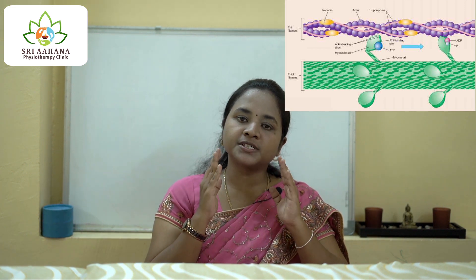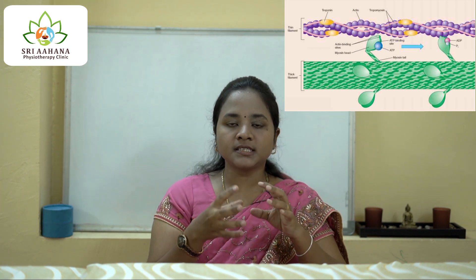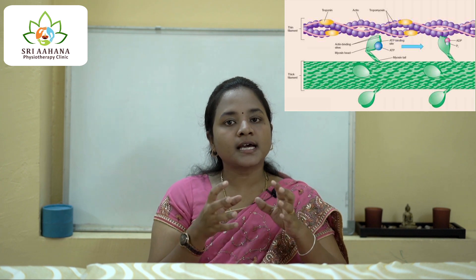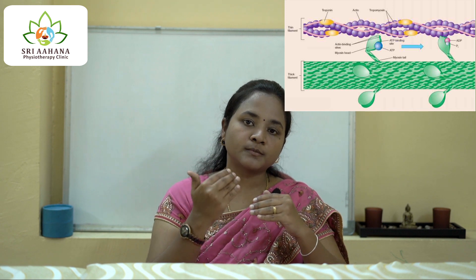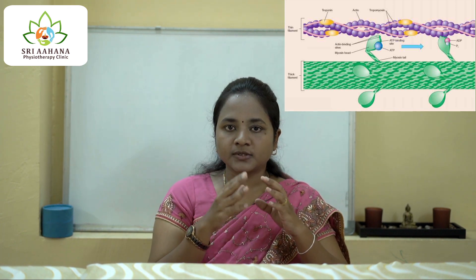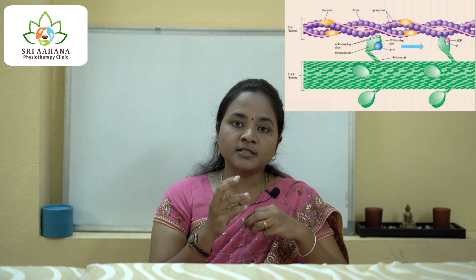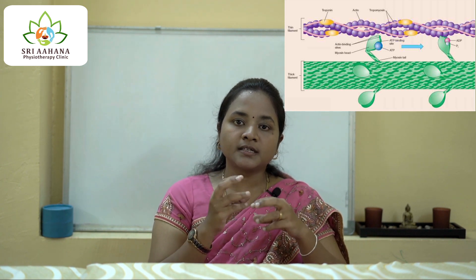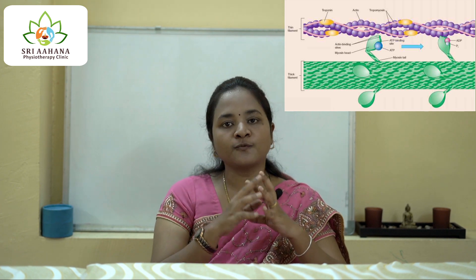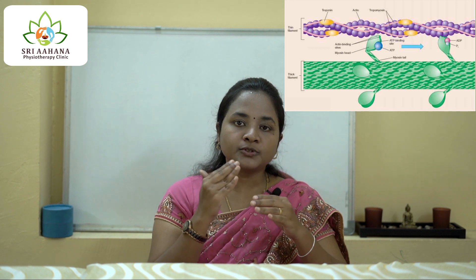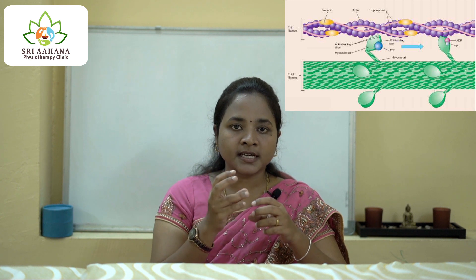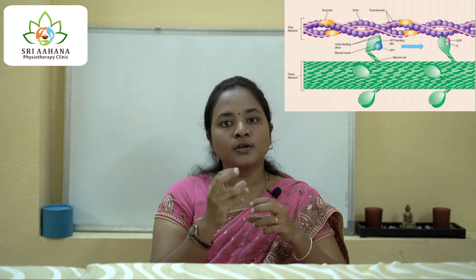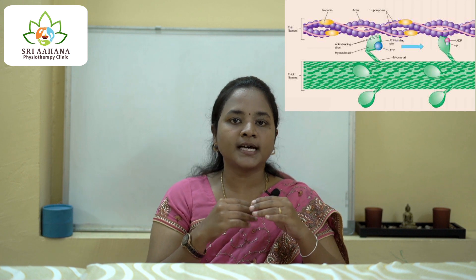The action potential helps in releasing calcium ions. These calcium ions are responsible for repositioning of the tropomyosin molecules by the troponin, so that the actin becomes free. That free part of actin is the only thing that binds to the head groups of myosin, as shown in the figure.